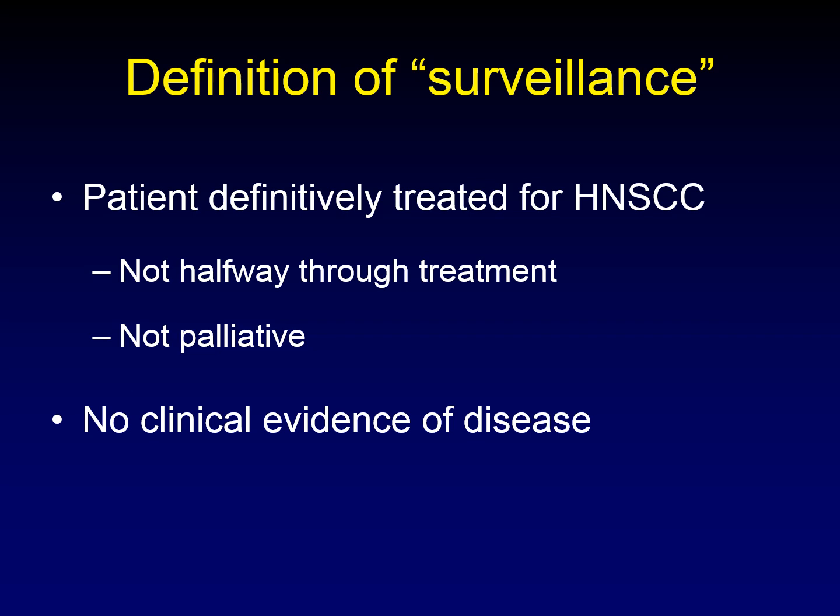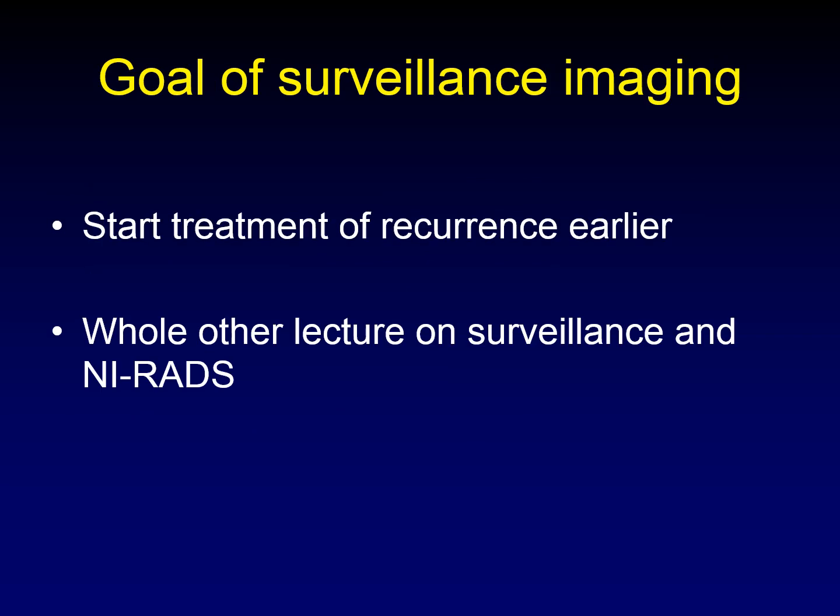Surveillance imaging occurs when a patient has been definitively treated for cancer and is believed to be cured, with no clinical evidence of disease. The goal is to detect recurrence earlier than it would be evident clinically, so salvage treatment can begin sooner — and while not proven, we believe this improves survival. There is a separate lecture on this channel about surveillance of head and neck squamous cell carcinoma and the rise of NIRADS, which extends this discussion.